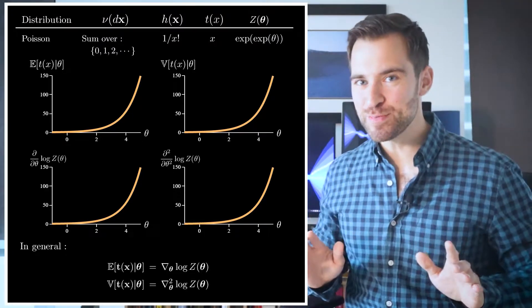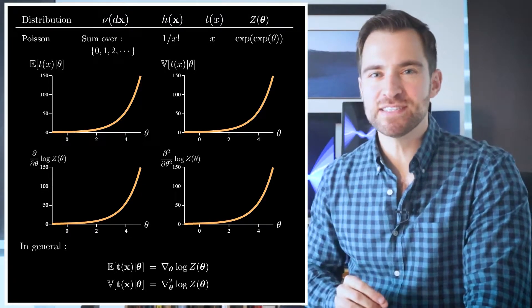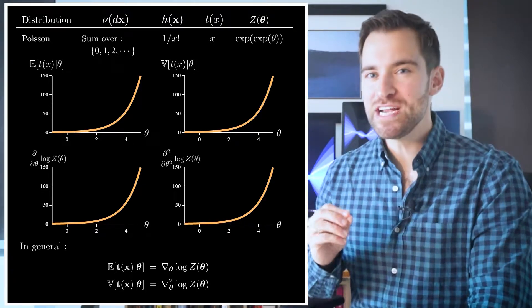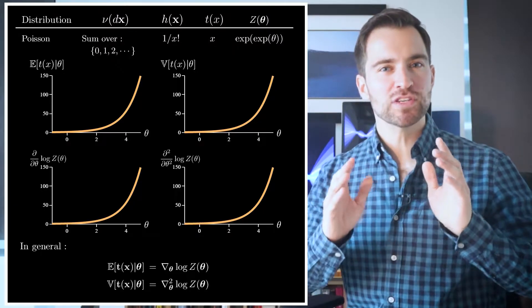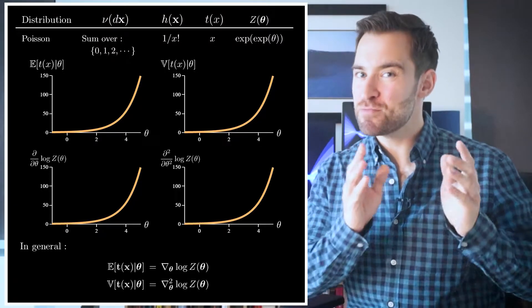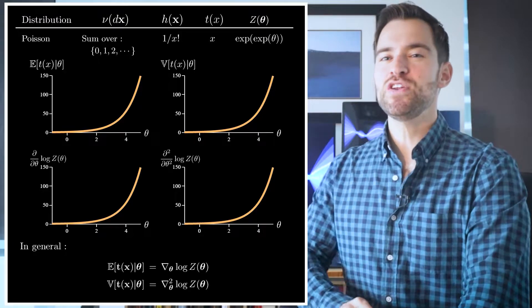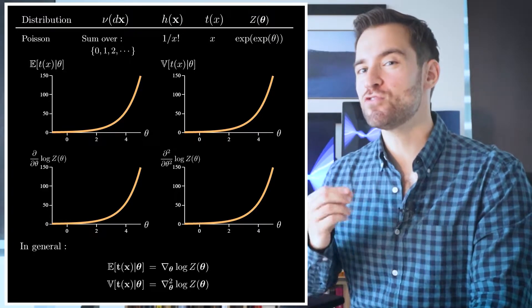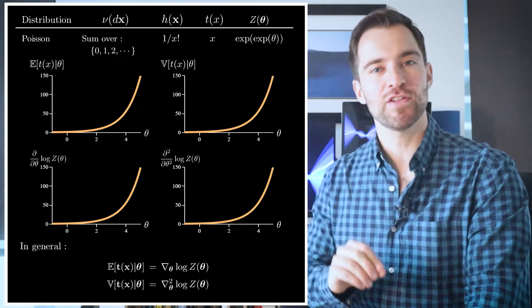If you don't know, the gradient and the Hessian are higher dimensional analogs of the derivative and second derivative. Okay, let's zoom out. Remember, θ determines the distribution of the sufficient statistics. What these equations tell us is, if you want important descriptors of that distribution, like their mean and covariance, then you need only take the gradient and the gradient of gradients, the Hessian, of the log normalizer.